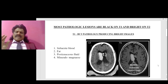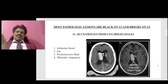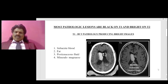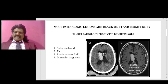Most neurological lesions appear black or hypointense on T1, and bright or white or hyperintense on T2. However, there are four disorders and four chemical substances that produce the opposite changes. Most importantly, subacute blood appears bright on T1. Other substances producing bright T1 images include fat, proteinaceous fluid, and minerals like manganese.